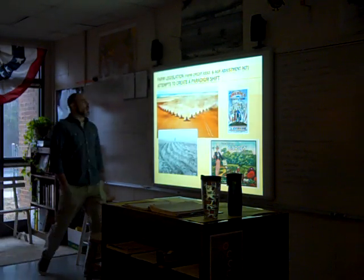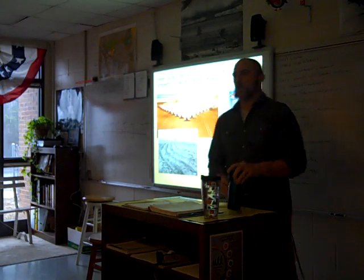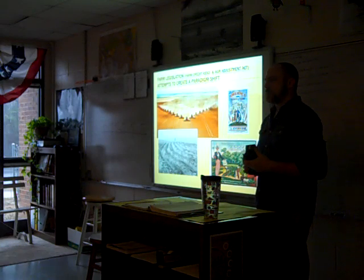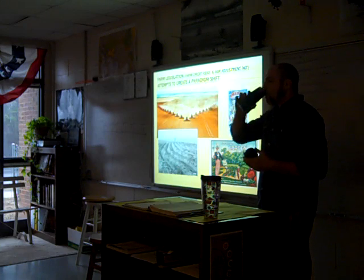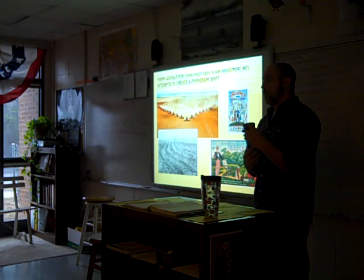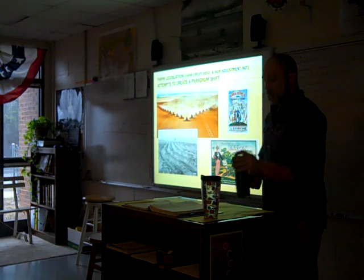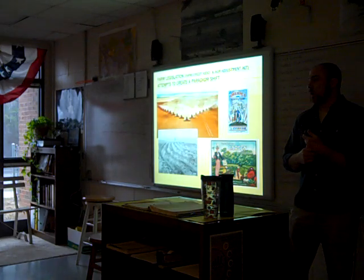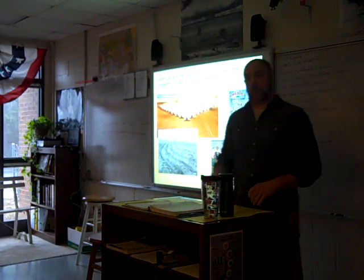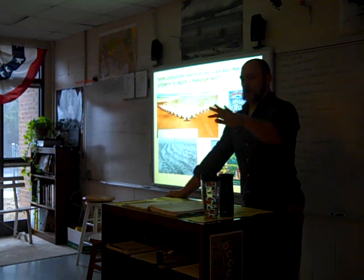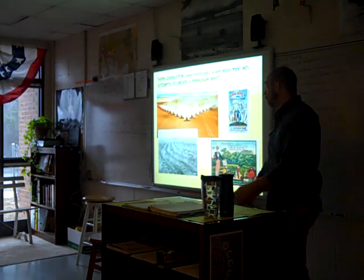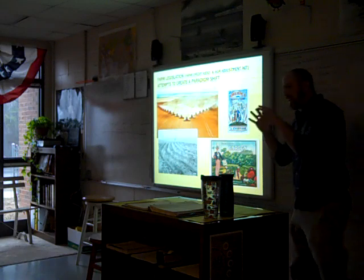Farm legislation — FDR was attempting to create a paradigm shift, changing the way farmers approach their business. What was the problem with farming? Same problem as industry — overproduction coupled with underconsumption. And when you have that, the price of your goods decreases. We've got this Farm Credit Association that he puts through, designed — I called it nearly a safety net for farmers. Why? It allows them to refinance their mortgages, making sure that those farmers get to stay on their farms.